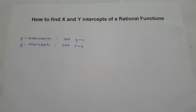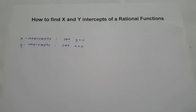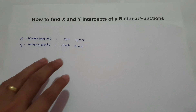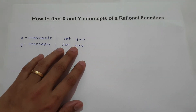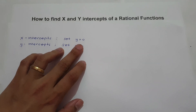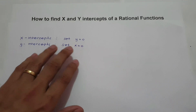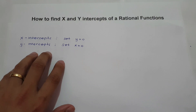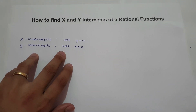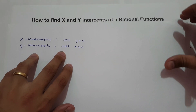Welcome to another video. In this video, we are going to talk about how to find x and y intercepts of a rational function. To find x intercept, you simply set the value of y equal to 0. And to find y intercept, you simply set the value of x equal to 0.